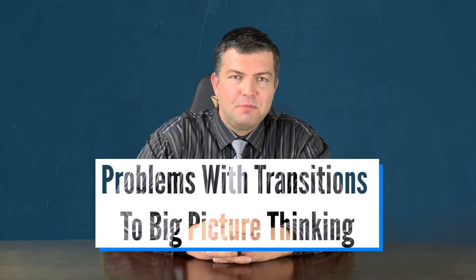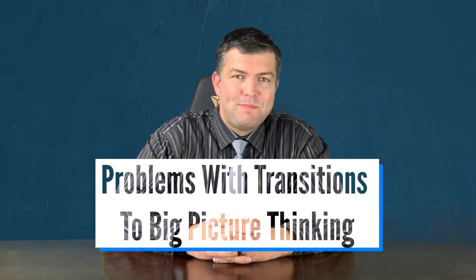Number four, ISTJ problems with transitions to big picture thinking. The ISTJs least preferred function is that of intuition. As mentioned earlier in this video, ISTJs are really good at picking up the details in their immediate environments, but transitioning to a big picture perspective can be challenging for an ISTJ.